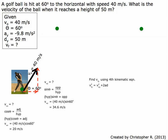Now we're going to find the final velocity in the y direction at both of these heights using the fourth kinematic equation. The 20 meters per second in the x direction is constant all the way through, so no matter where the ball is, the x direction is always going to be 20 meters per second. We're going to isolate the final v in the y direction by taking the square root of both sides.